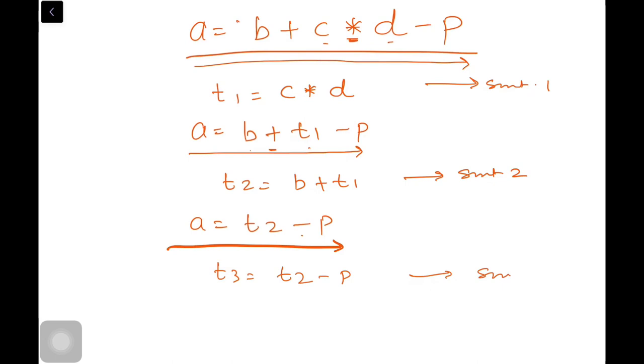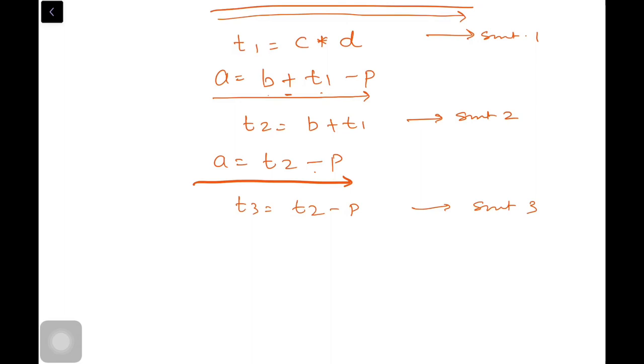After having a third statement, how will the final statement look like? a is equal to t3. Because this is our substitute. Now which operator has one? Is equal to operator from last. Only one is equal to operator.